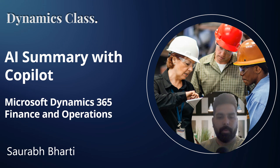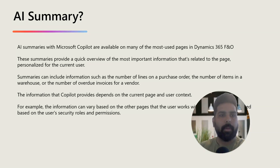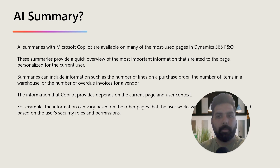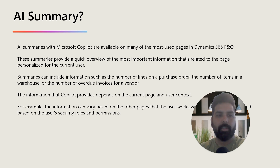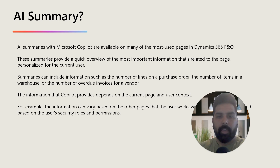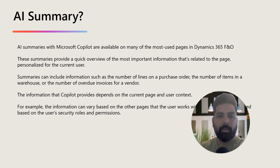So let's talk about what is AI summary in D365 FNO. AI summaries with Microsoft Copilot are available on many of the most used pages in FNO. These summaries provide a quick overview of the most important information related to the page, personalized for that particular user. Summaries can include information such as the number of lines in a purchase order or sales order, the number of items in a warehouse, or the number of overdue invoices for a vendor or customer.